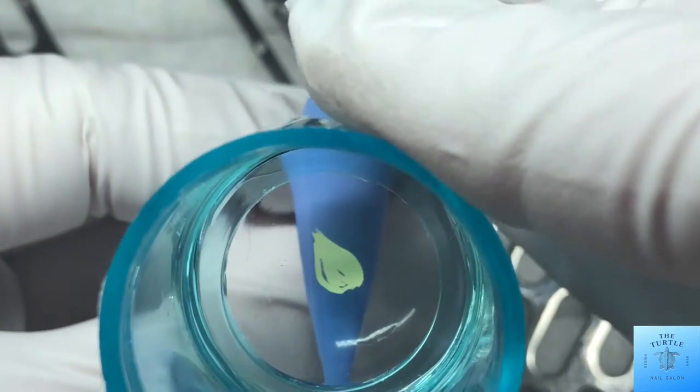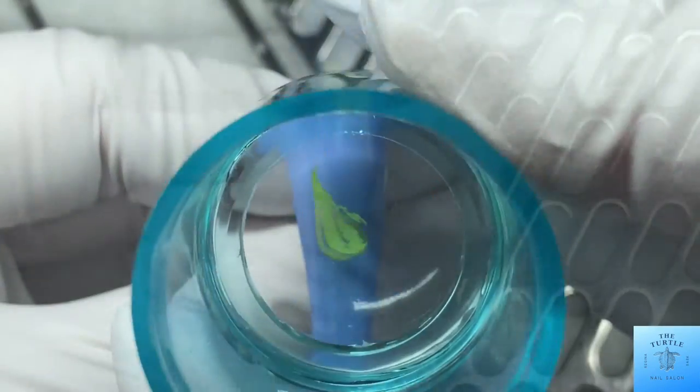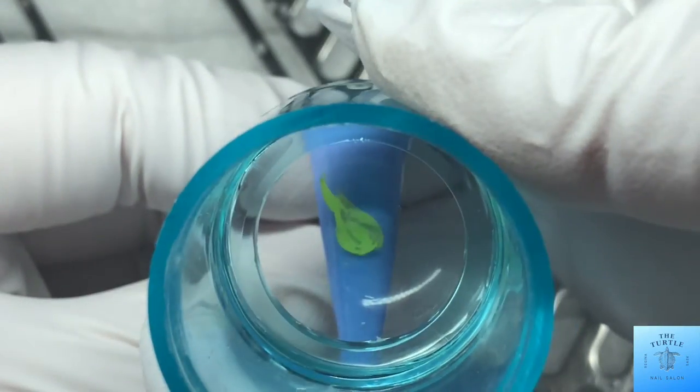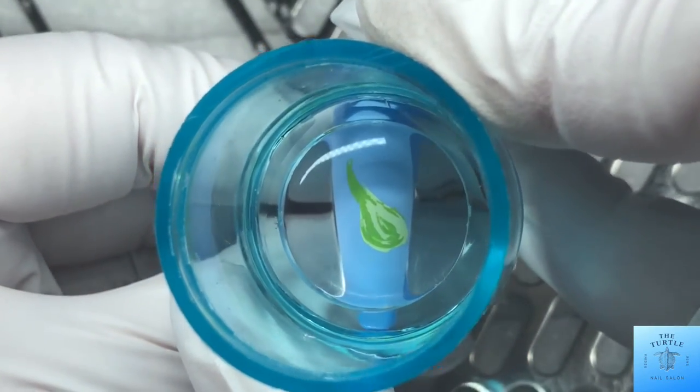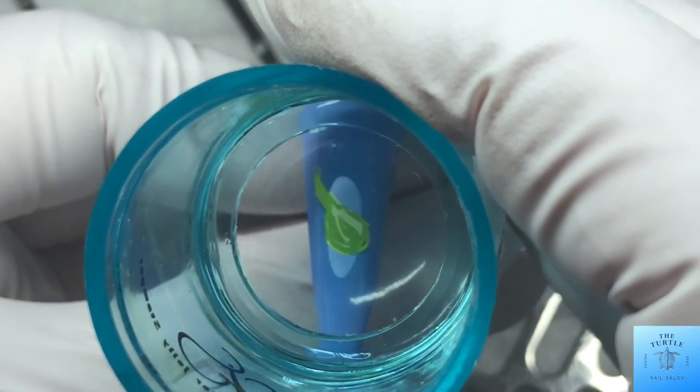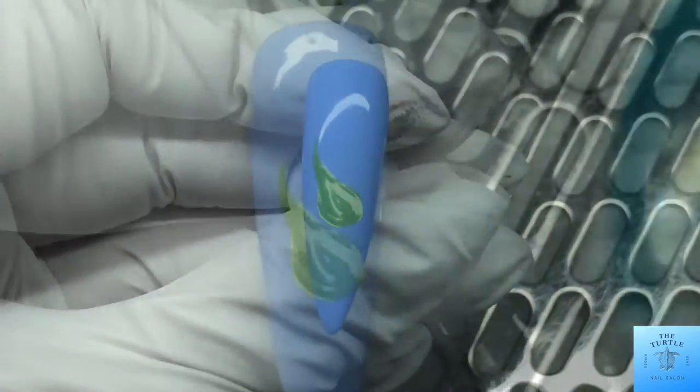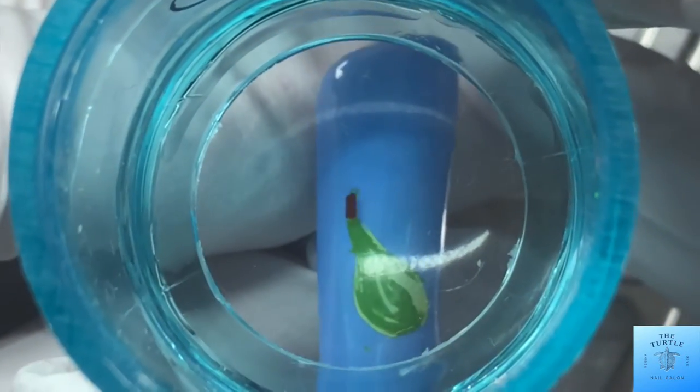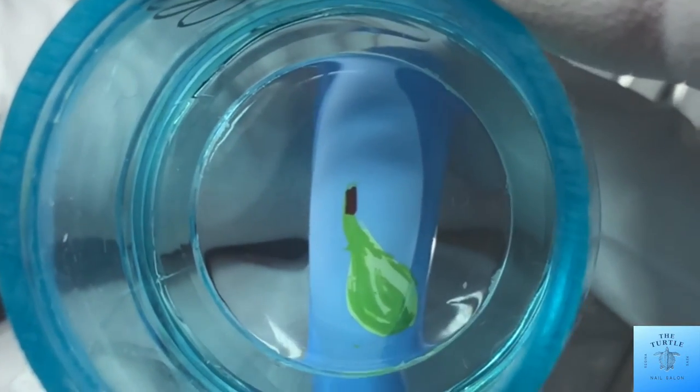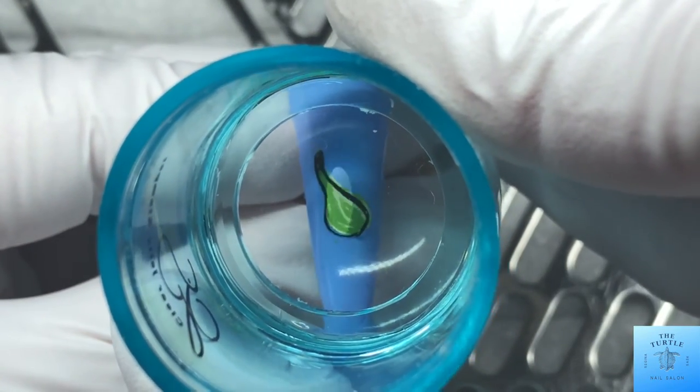Then we're going to do a pear, and then this one I kind of messed up so I had to go in and fix it. And then I'll just put in the stem of the pear as well, and then the outline.